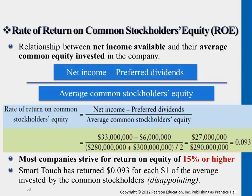Usually common stockholders' equity is the majority part compared to preferred shares. Preferred shares usually is a lot less. Keep in mind that each and every publicly traded company would have common shares, but not necessarily preferred shares. So this rate of return compares the return to common shareholders — that's why we use net income.